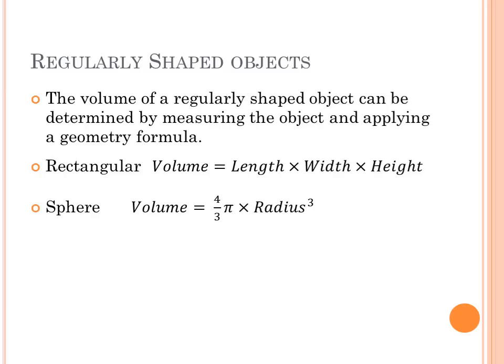If we have a sphere, the volume is 4 thirds pi times the radius cubed. If we have a cylinder, the volume is pi times the radius squared times the height.